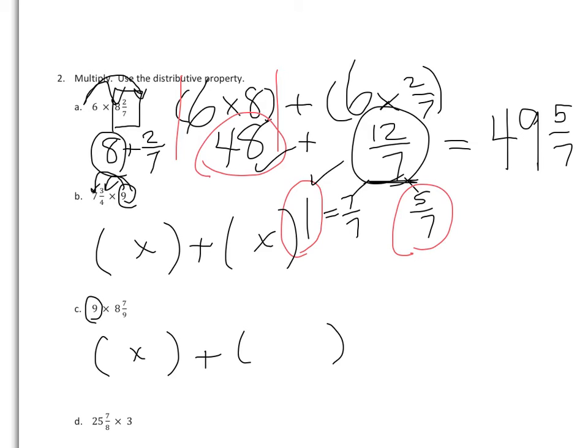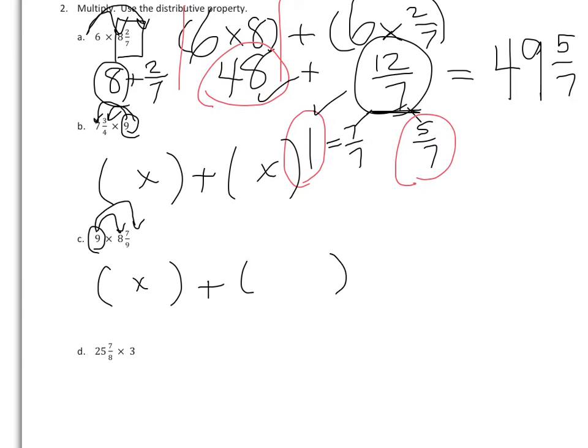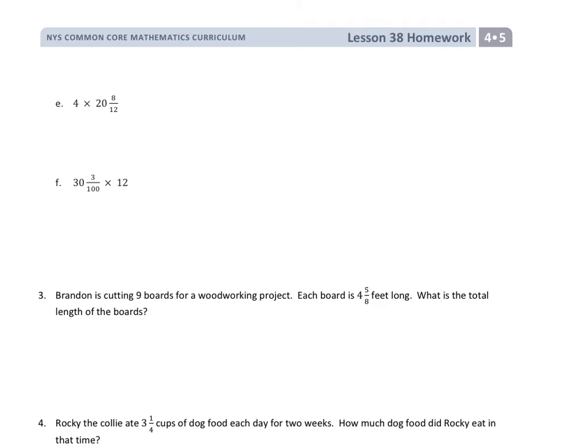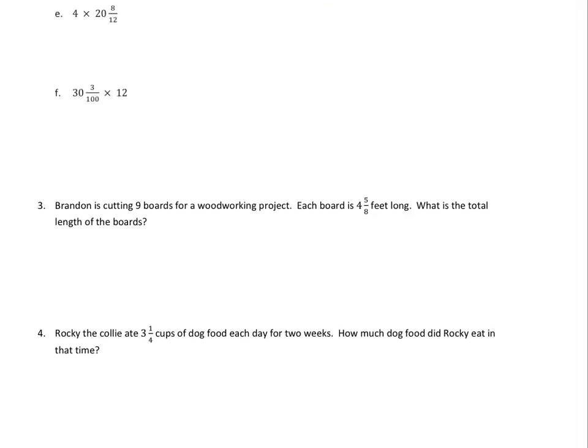So here they would need 9 copies of 8, 9 copies of 7 ninths, and reminding them to change, as they saw here, any improper fraction into its mixed number. They're going to continue to do that on the back. The numbers get a little large, but they can use a calculator if you have one at home.